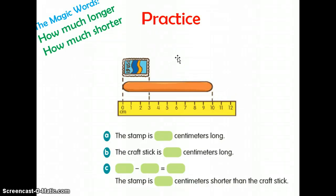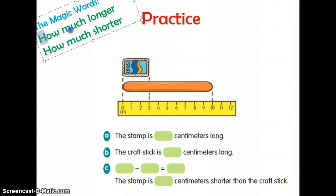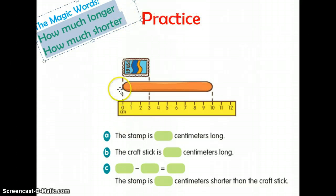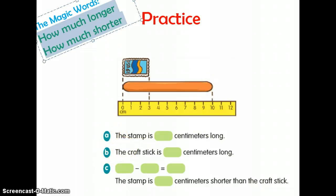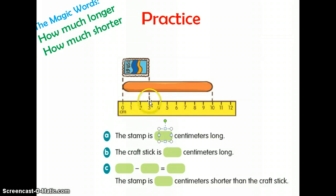The next page, we're going to do some practice. Notice at the corner here, we have the magic words: how much longer and how much shorter. Whenever you see or hear those words, that's telling you that you need to subtract because you're comparing. Here we have a picture of a stamp and a craft stick. In A and B, we're only going to write the lengths of the objects. The stamp measures 3 centimeters and the craft stick measures 10 centimeters.